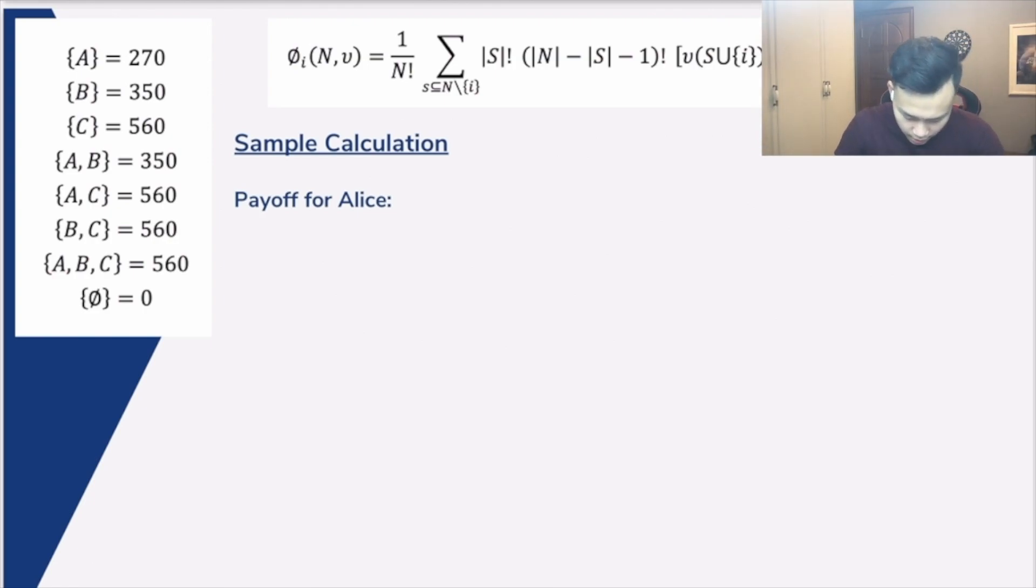Now I'm going to perform this sample calculation and show you guys how we can calculate the fair payoff that Alice should pay if Alice, Bob, and Catherine decided to take the taxi together. First we look at this part. We're first trying to identify all those coalitions that belong to a subset of all finite players N that does not include player i. In this case, if we're trying to find the payoff for Alice, we must first identify all those coalitions, those subsets that do not include Alice inside. What are those coalitions? It's basically set B, set C, set BC, and then this empty set. Here are four subsets that do not involve Alice.